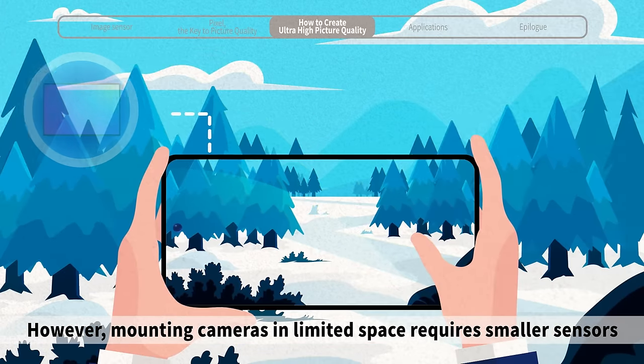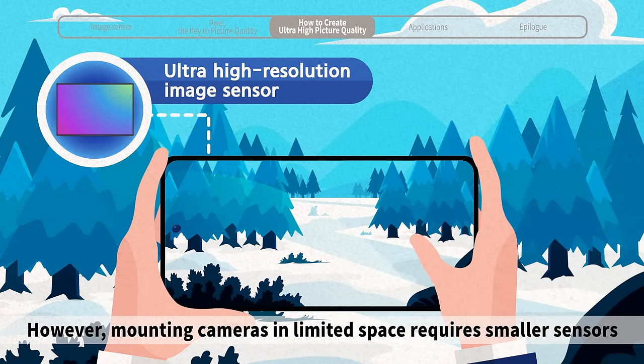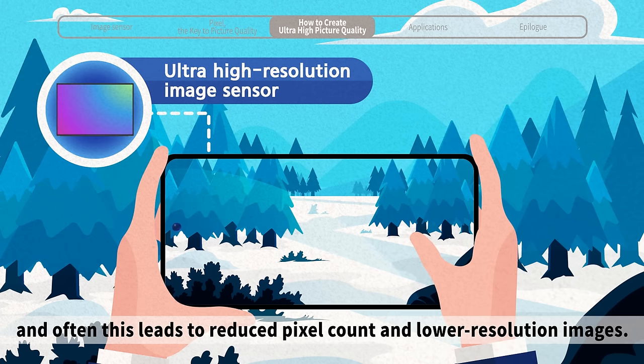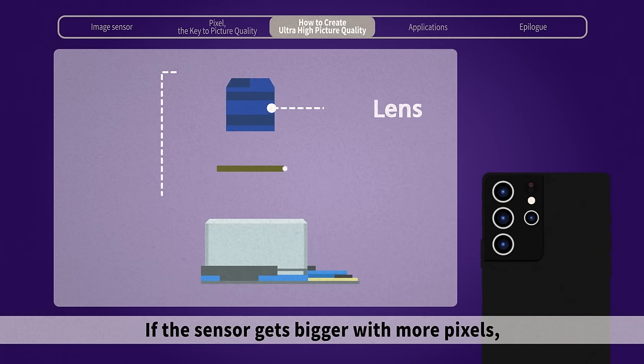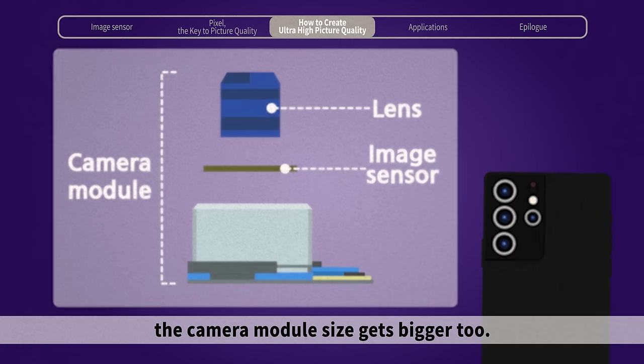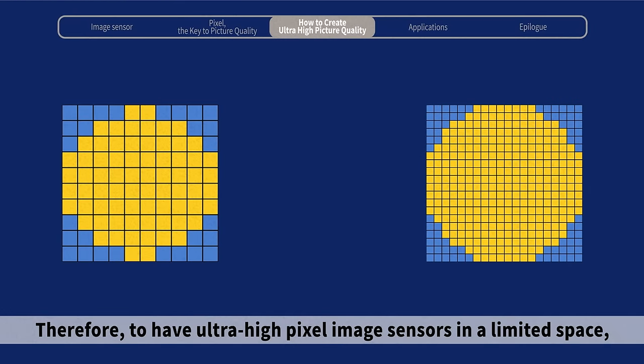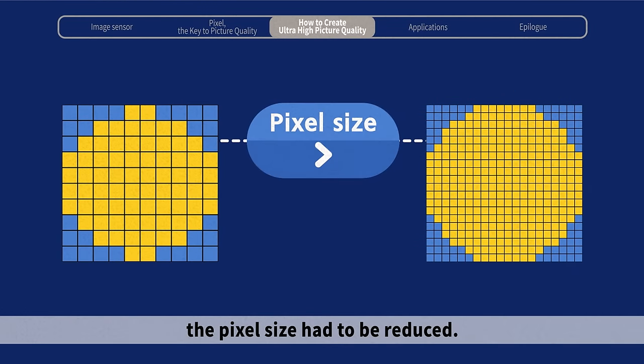However, mounting cameras in limited space requires smaller sensors, and often this leads to reduced pixel count and lower resolution images. If the sensor gets bigger with more pixels, the camera module size gets bigger too. Therefore, to have ultra-high pixel image sensors in a limited space, the pixel size had to be reduced.